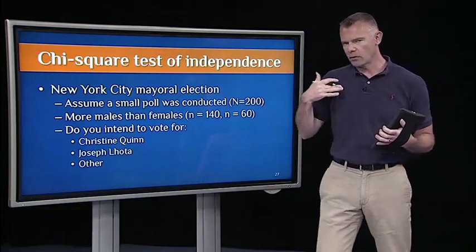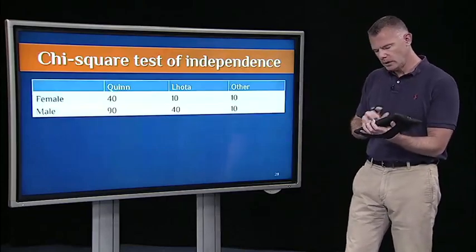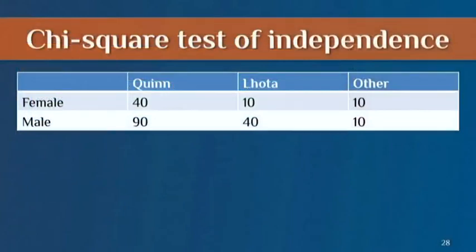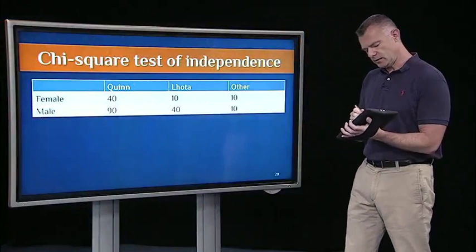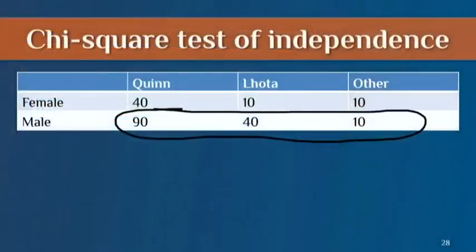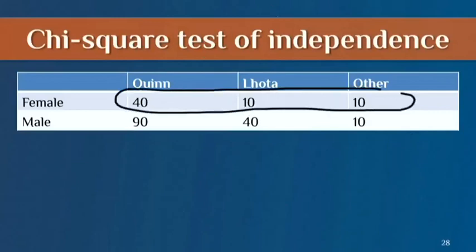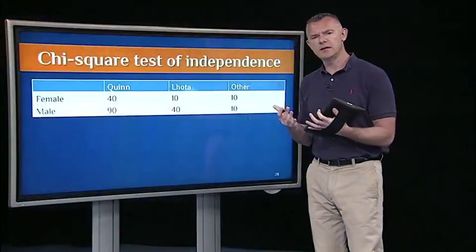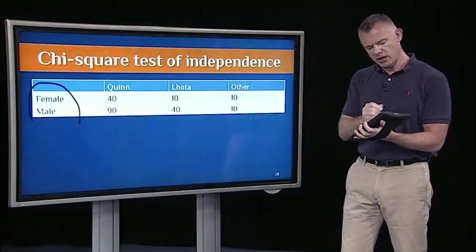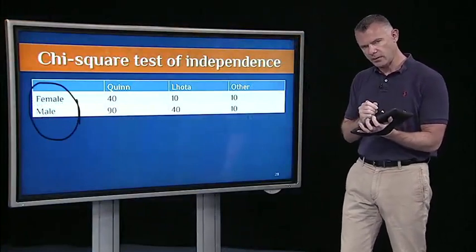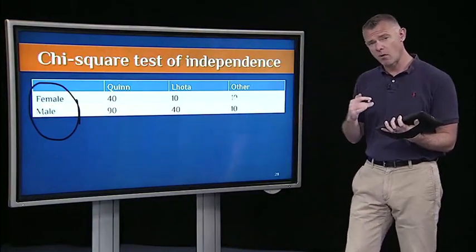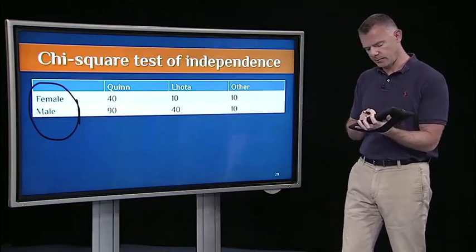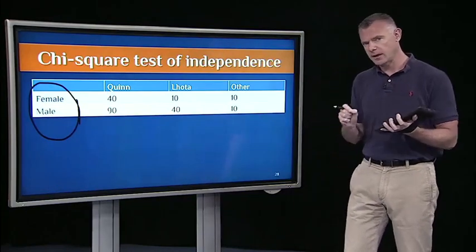We're going to look at whether the likely voter is intending to vote for Quinn, Loda, or some other candidate. Let's assume these are the observed results. Remember there were more male likely voters in this sample. In the men, it's 90, 40, and 10, going across Quinn, Loda, and other — so more people prefer Quinn. In the female voters, it's 40, 10, 10. The question we're asking is: is there a relationship between the gender of the voter and which candidate they prefer? It's a little difficult to eyeball this table because we have so many more men than women, and that's exactly why I did that. So let's go ahead and do the actual calculation, get a p-value, and see what happens.